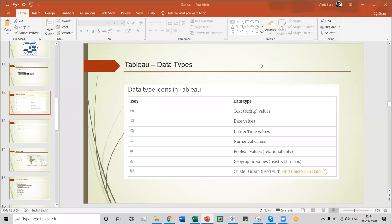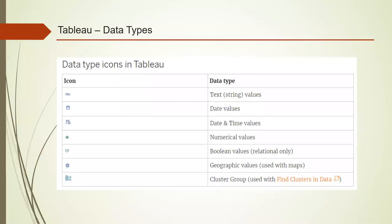Here are the data type icons that Tableau actually provides for users. The first is text, for which we use ABC. The second is the date value, with a calendar icon. For date and time, we use a calendar with a clock icon. For numerical value, Tableau uses a hash icon. For boolean values, it uses T/F, true or false. For geographical values, it uses an icon of a globe. And for cluster group, it has a different icon with a paper, pen, and a small graph attached. So each icon represents different types of data that a particular data set contains.